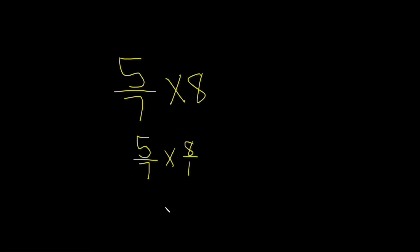And now we can do the multiplication. The way it works is, when you're multiplying fractions, just multiply the top parts. So 5 times 8, that's 40. And on the bottom, you get 7 times 1, that's 7. And that would be the final answer.